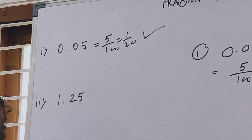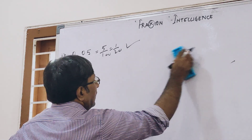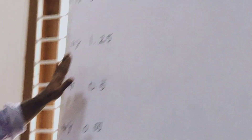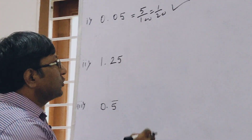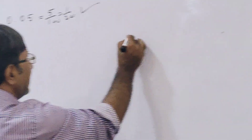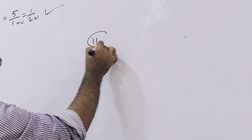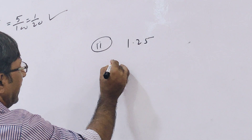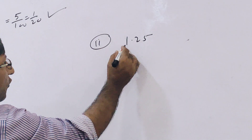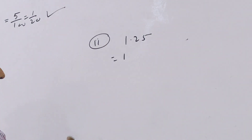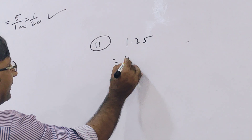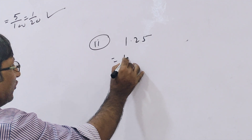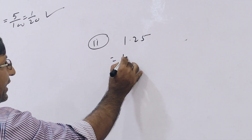This is the correct answer. In the same way, we have the second question: 1.25. So in the second question, 1 is the whole number part. And 0.25 gives us 25 by 100, so that is 1 and 25/100.